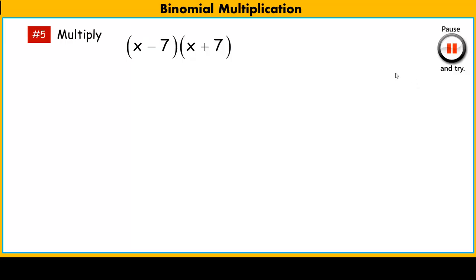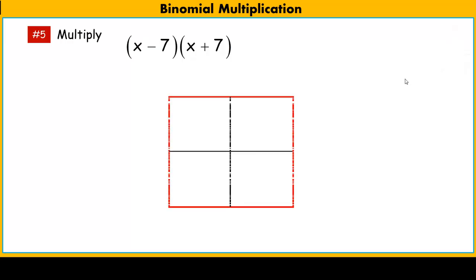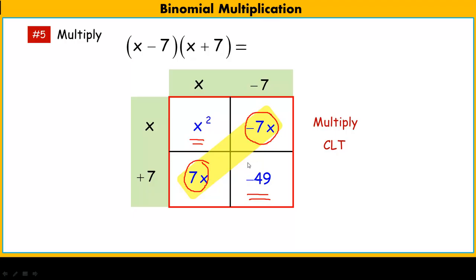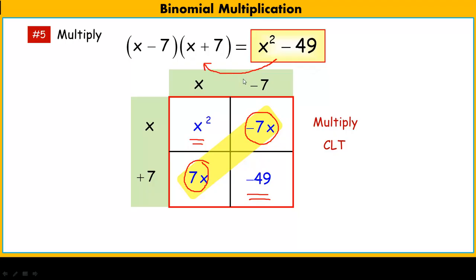Everything we've done so far has produced a quadratic trinomial. But this next one is a special case we'll focus on more when we talk about factoring. If we multiply through and get all our little sub-areas, then combine like terms, we see something interesting: we still have a leading term x squared and a trailing term of negative 49, but the linear terms — negative 7x and positive 7x — are opposites and cancel out to zero. So we get the quadratic binomial x squared minus 49. We'll be seeing this pattern again when we start to factor.